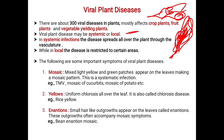Under systematic infection, the complete disease spreads all over the plant through the vasculature, whereas in local infection the disease is restricted to certain areas. The area of disease spreading is more in systematic infection and less in local infection, because systematic infection covers the maximum area while local infection is minimized to a specific area.